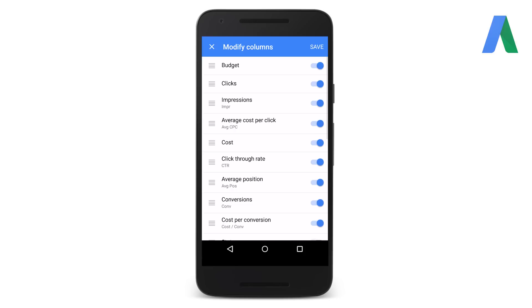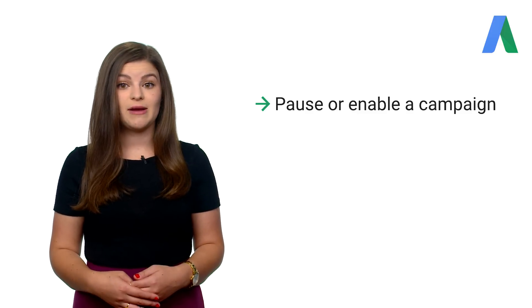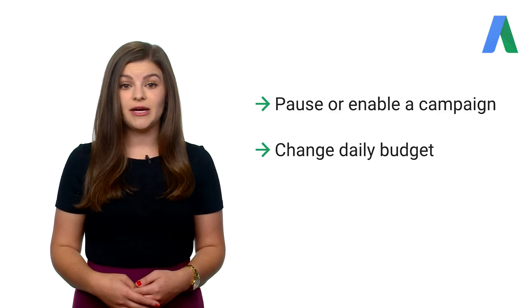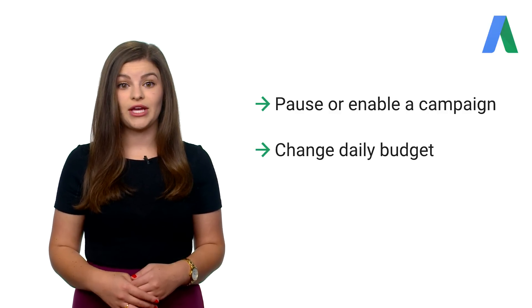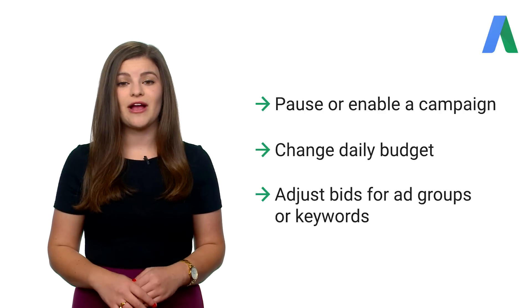Add and remove columns by toggling the circle on the right, and reorder columns to conveniently view key metrics by pressing the horizontal bars and moving the metric to its desired order. In addition to conveniently viewing campaign performance data, you can also take a number of actions within the AdWords app, like pausing or enabling a campaign when a promotion is about to start, changing your daily budget, or adjusting your bids for ad groups or keywords that are driving high quality potential customers to your site. Let's walk through how to make these changes in the app.